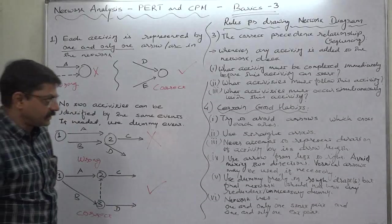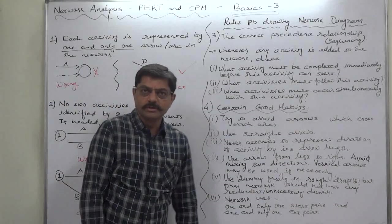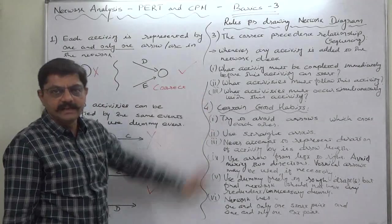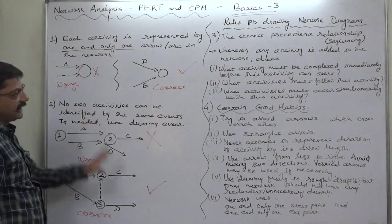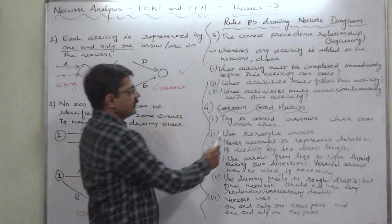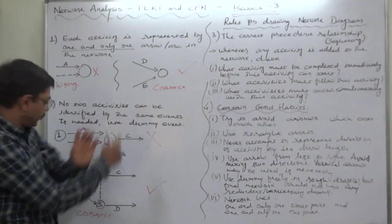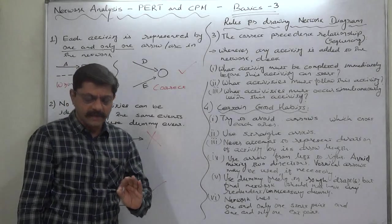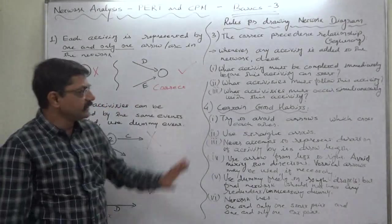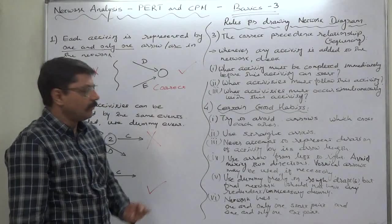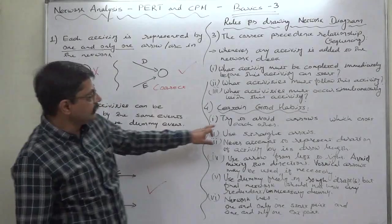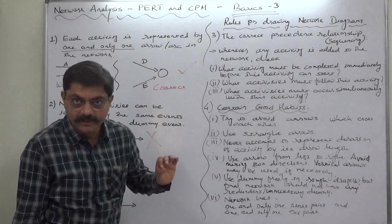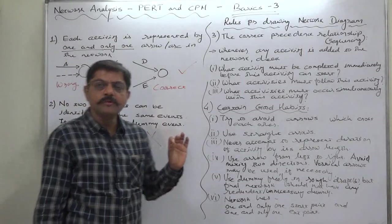Number four, some good habits. It is good to have some habits which help creating a perfect or a correct network diagram. Number one is try to avoid arrows which cross each other. It is not necessary or rather it is not possible always to avoid this situation. But, whenever it is possible, we try to avoid arrows which cross each other. But, it is not prohibited. It should be a rare thing.